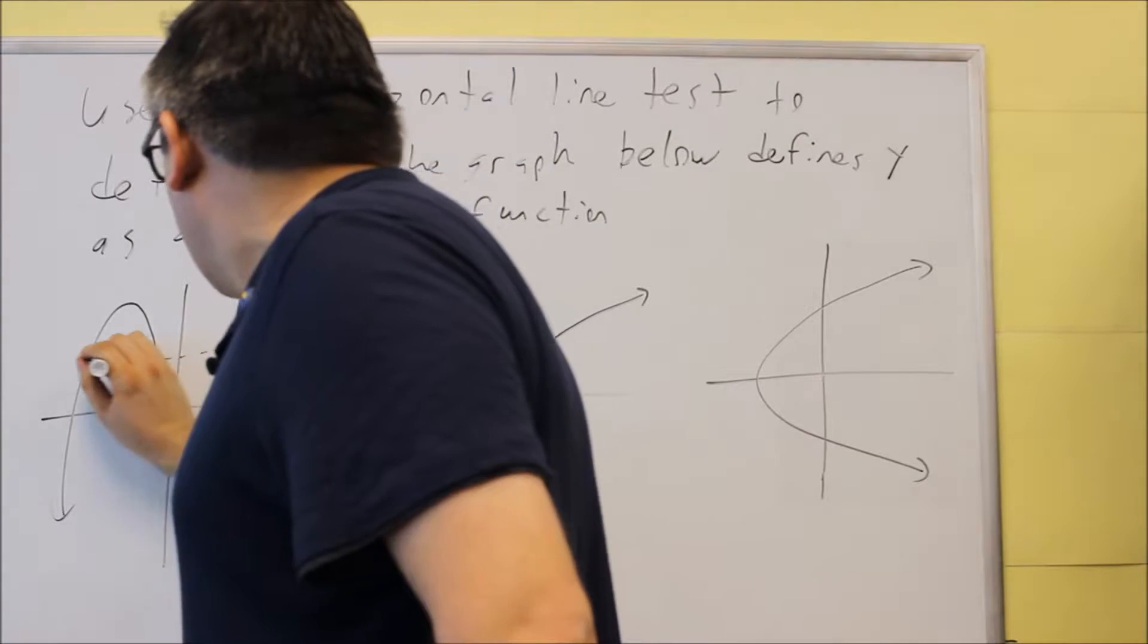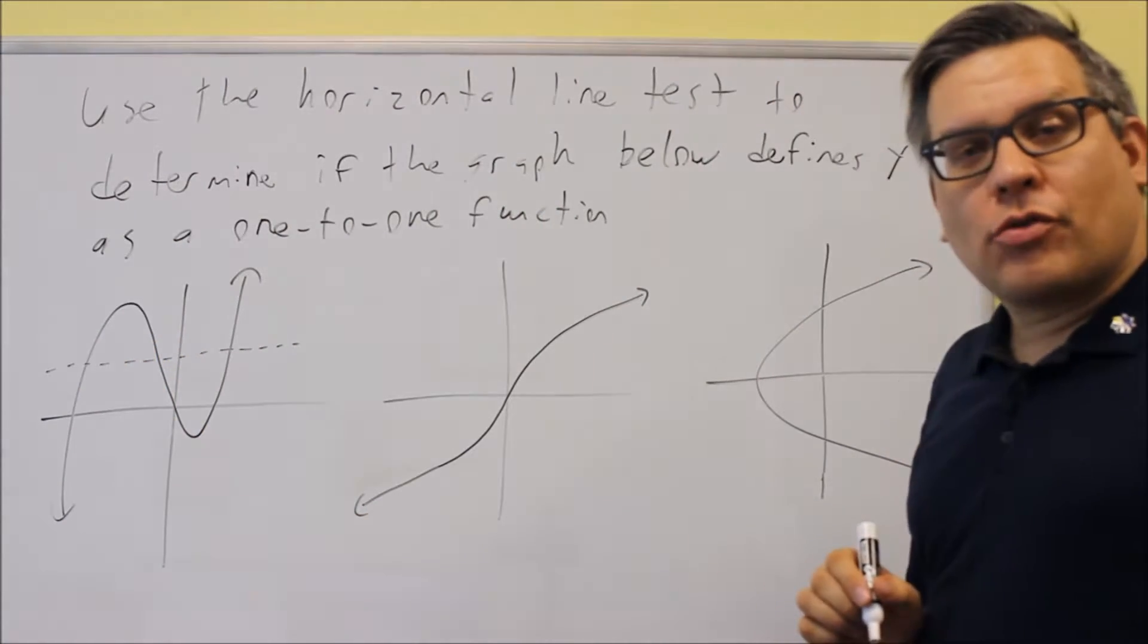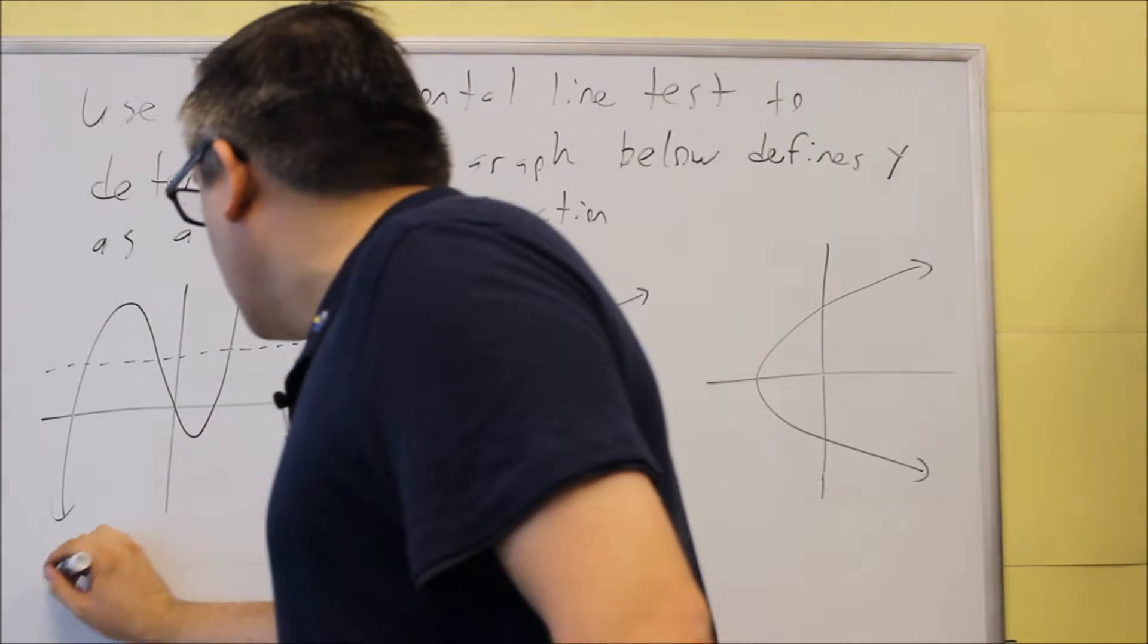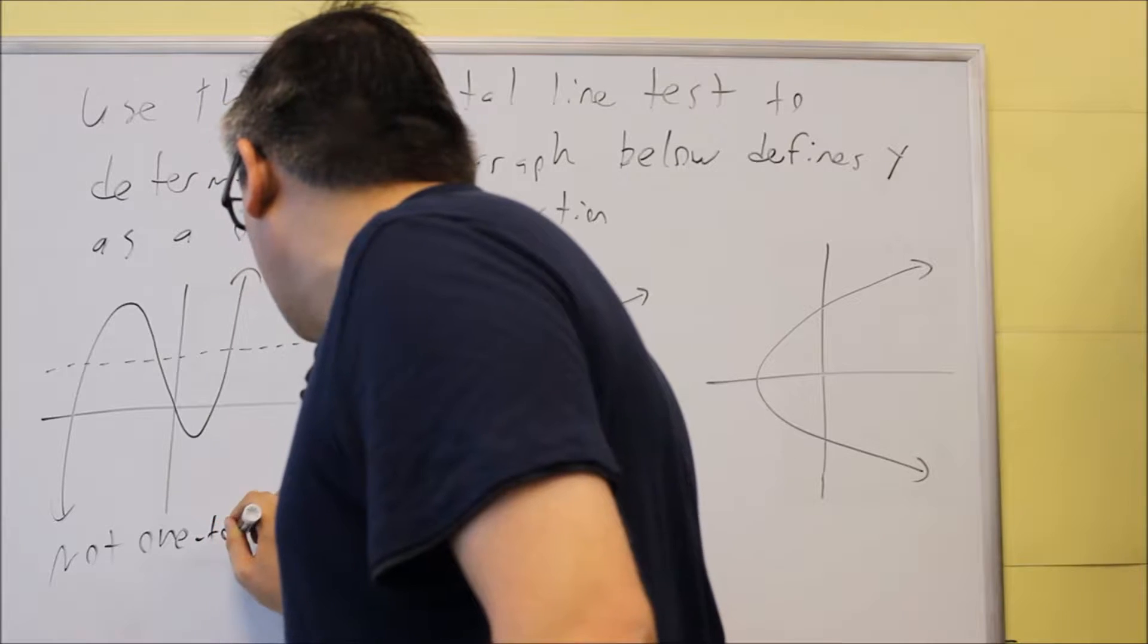So for instance right here, if I draw a dotted line through that one like that, it hits the graph three times. So the conclusion is I can say not one-to-one.